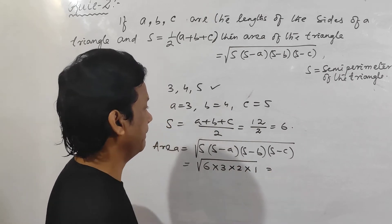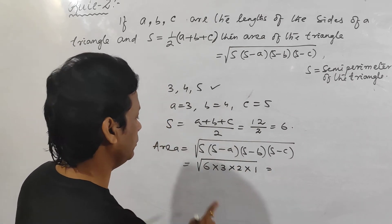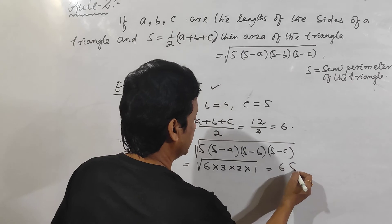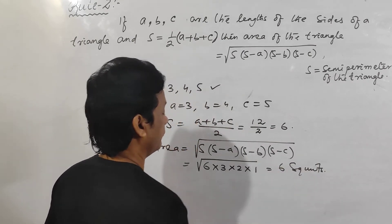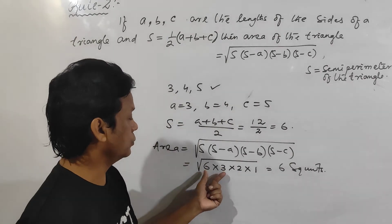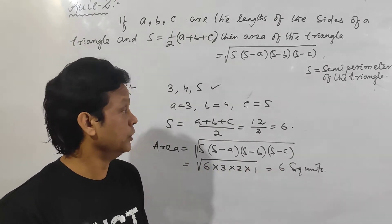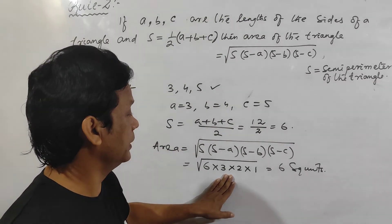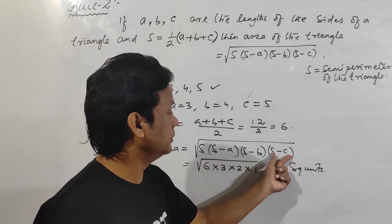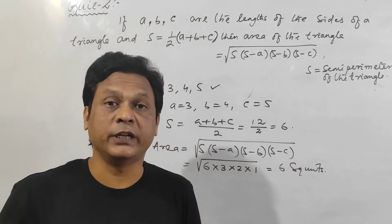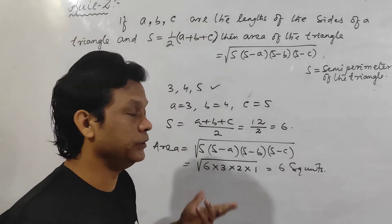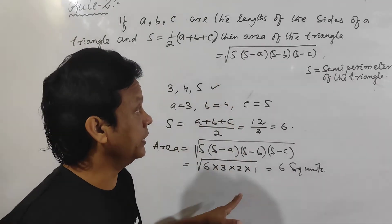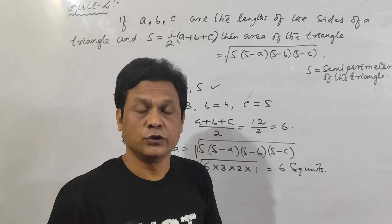So the area equals square root of 6 into 3 into 2 into 1, which equals square root of 36, and that gives us 6. You can find this out very easily. The benefit of this formula is that the terms s minus a, s minus b, s minus c become very small, and you can directly apply the square root. The square root will be easily determined.